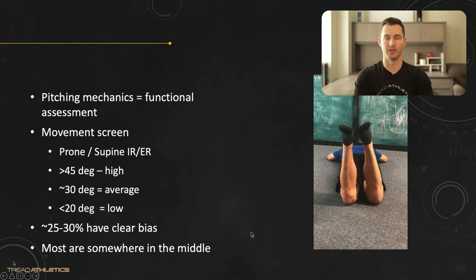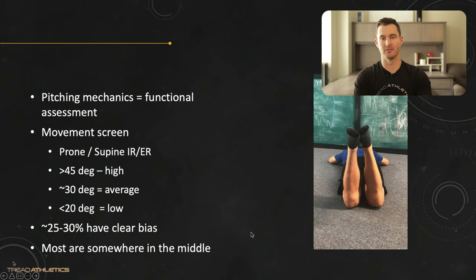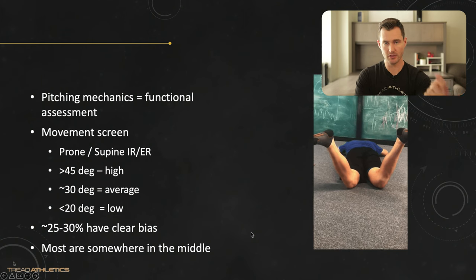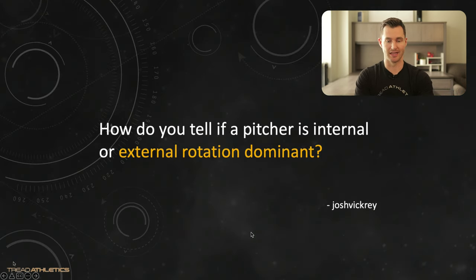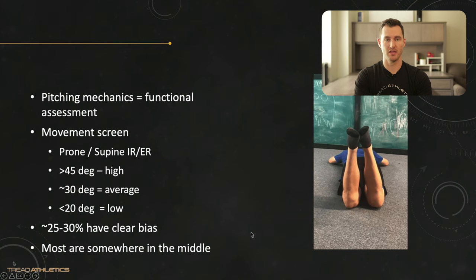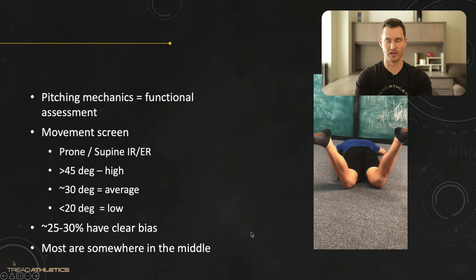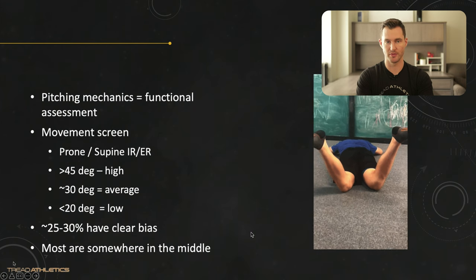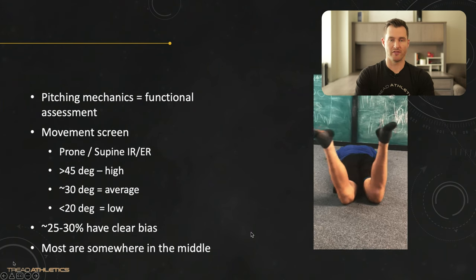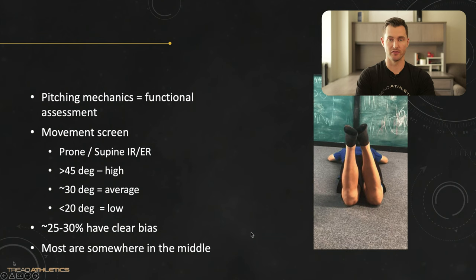How they actually move on the mound tells us a lot about what their mobility limitations might be. Conversely, as their mobility improves, you can often see that play out in the way they move on the mound. To answer specifically: if you want to put numbers on it, we like to use prone internal rotation and external rotation assessment. For remote athletes, prone works well; in person, supine IR/ER works very well because the clinician can control it better.